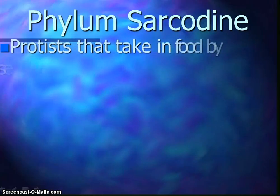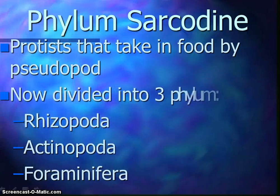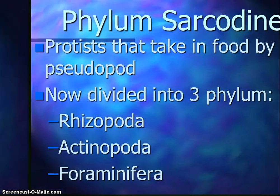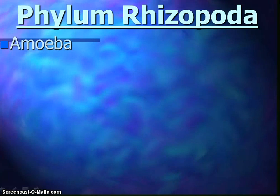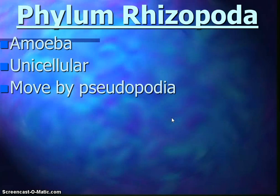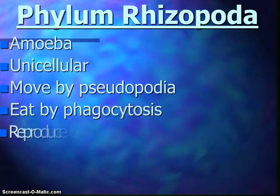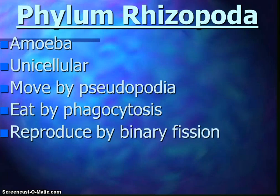The first group is the Sarcodines — protists that take in food by pseudopods, divided into three phyla. The rhizopods include the amoeba, the simplest of the protists. They're unicellular and move by pseudopods — false feet — used for locomotion and engulfing food. The pseudopod is made by flexible plasma membrane and constant movement of the cytoplasm, with cytoskeleton helping movement. They eat by phagocytosis: food is surrounded by the pseudopod and brought into the cell for digestion. They have minimal skeletons that make up the limestone and chalk on Earth, and they reproduce asexually by binary fission.